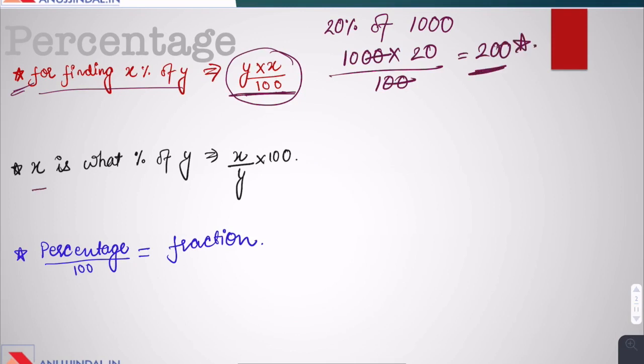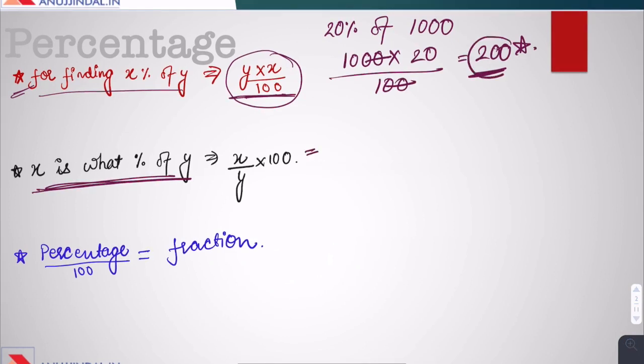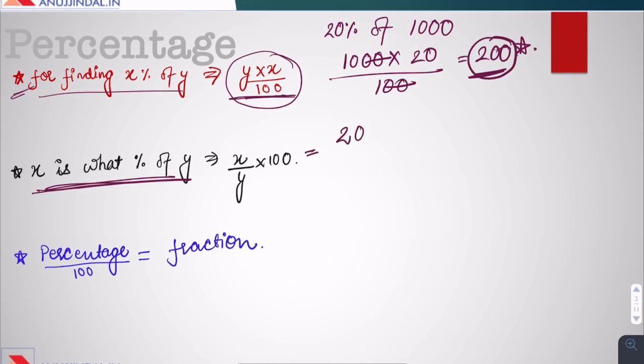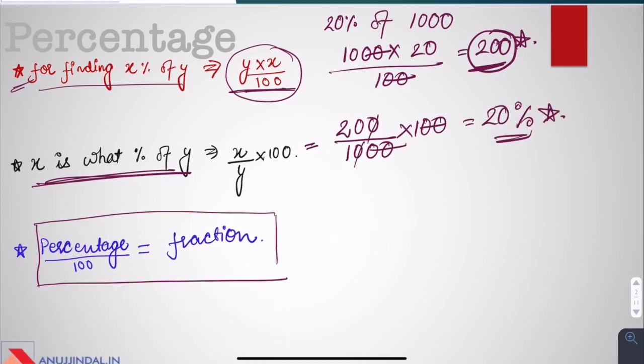Similarly, when you have to find that x is what percent of y, suppose you have to find out that 200 is what percent of 1000, then you divide 200 by 1000 and multiply it by 100, you get 20%. To convert percentage into fraction, we divide it by 100 or multiply the fraction by 100 to get percentage.